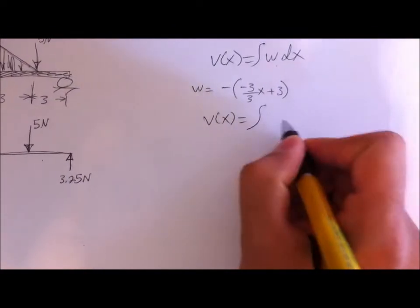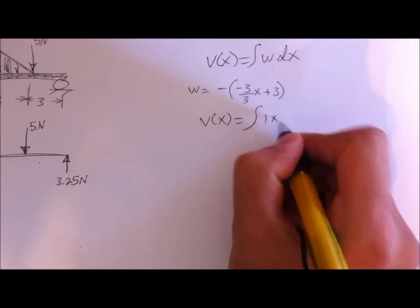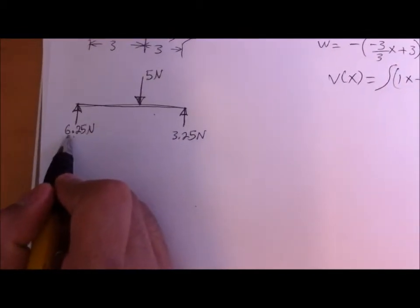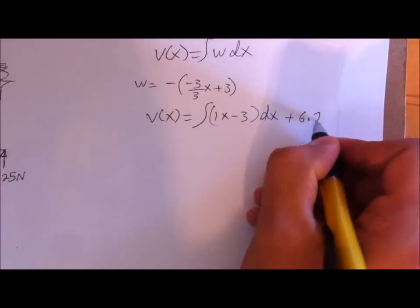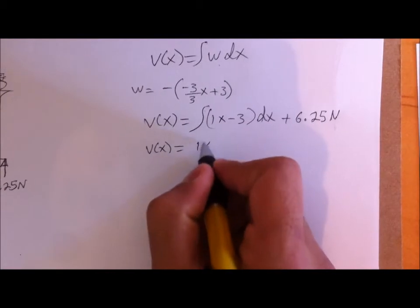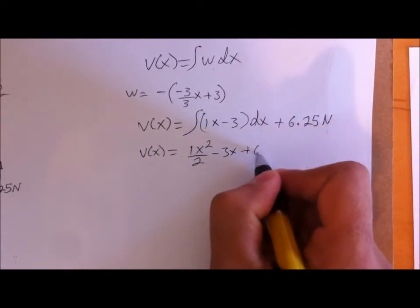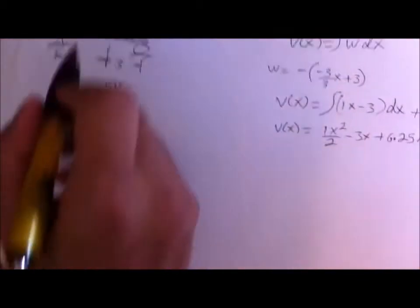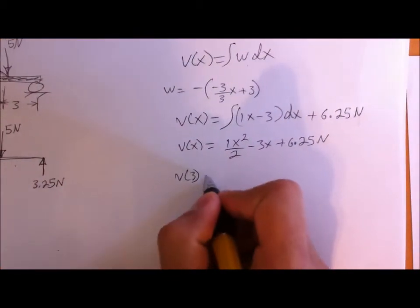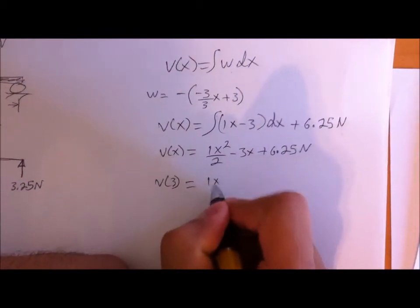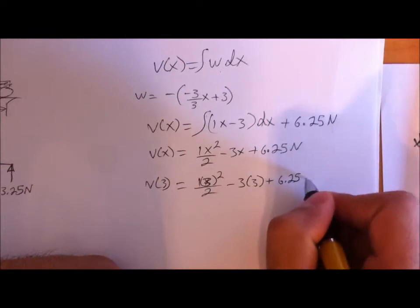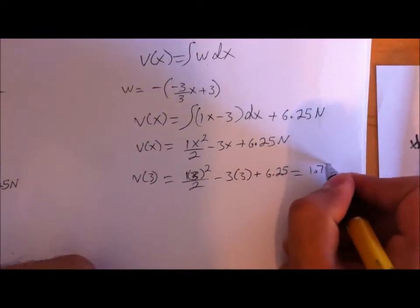We can say V(x) equals the integral of (x minus 3) dx. Looking at the starting point, which begins at 6.25 N, we solve for this interval and end up with V(x) equals x²/2 minus 3x plus 6.25 N. Since this slope ends exactly at 3 meters, we plug it in: at x = 3, we have (3² / 2) minus (3 × 3) plus 6.25, and we end up with 1.75 N.